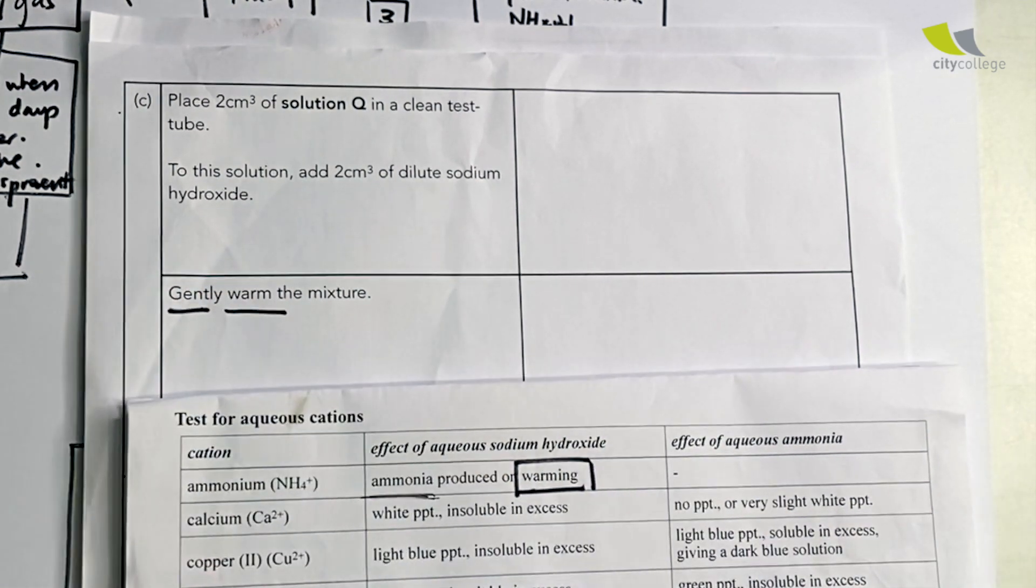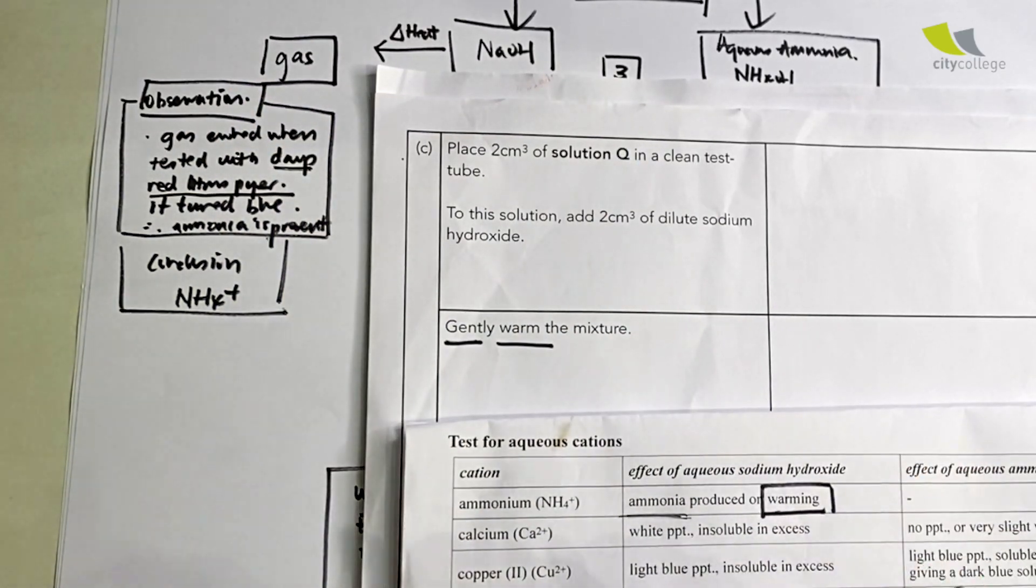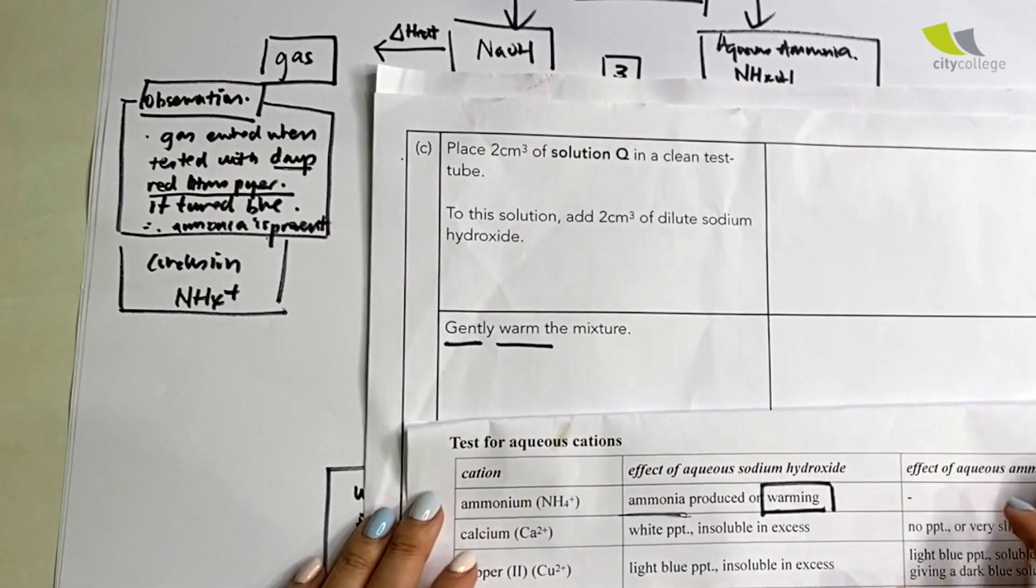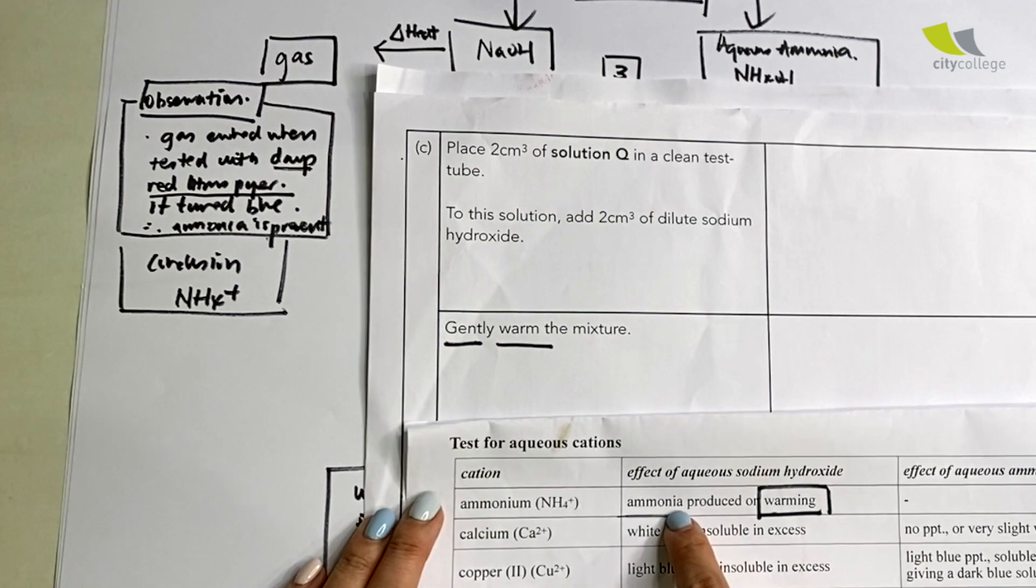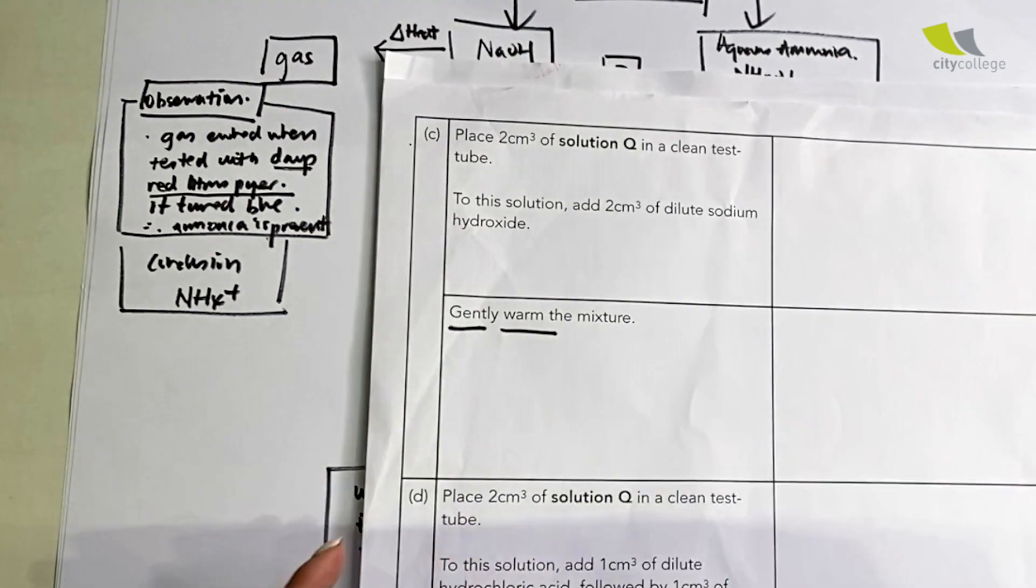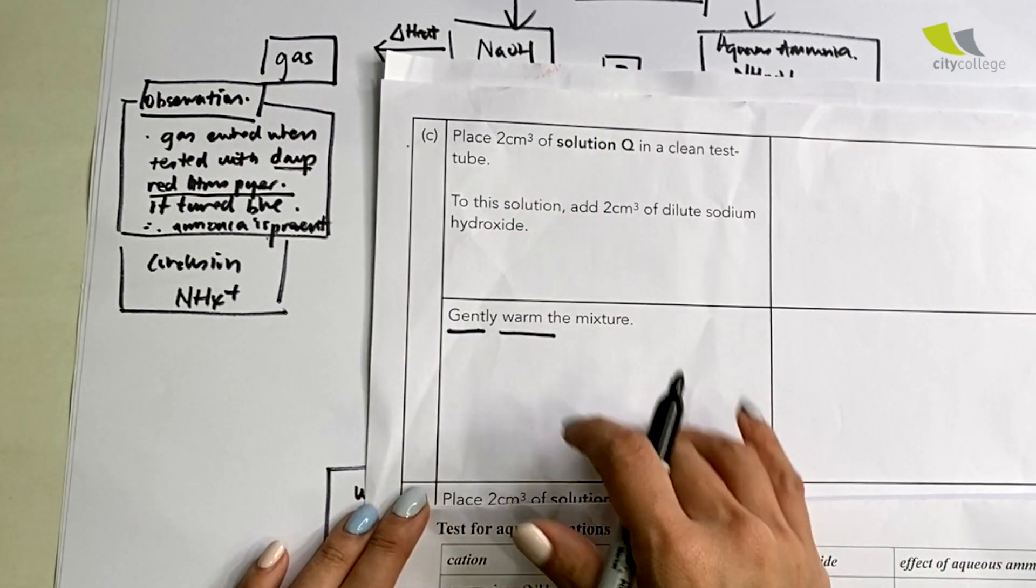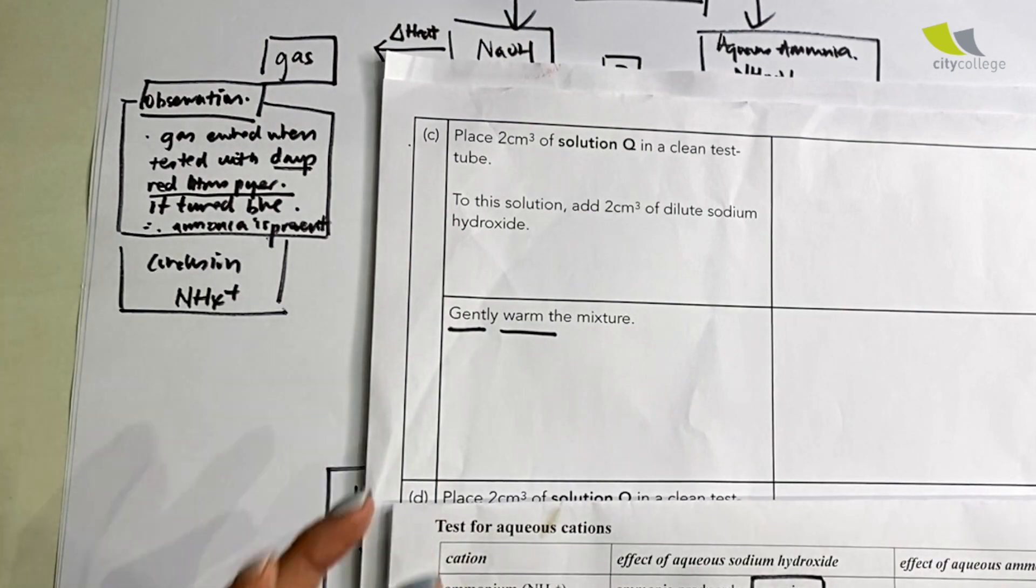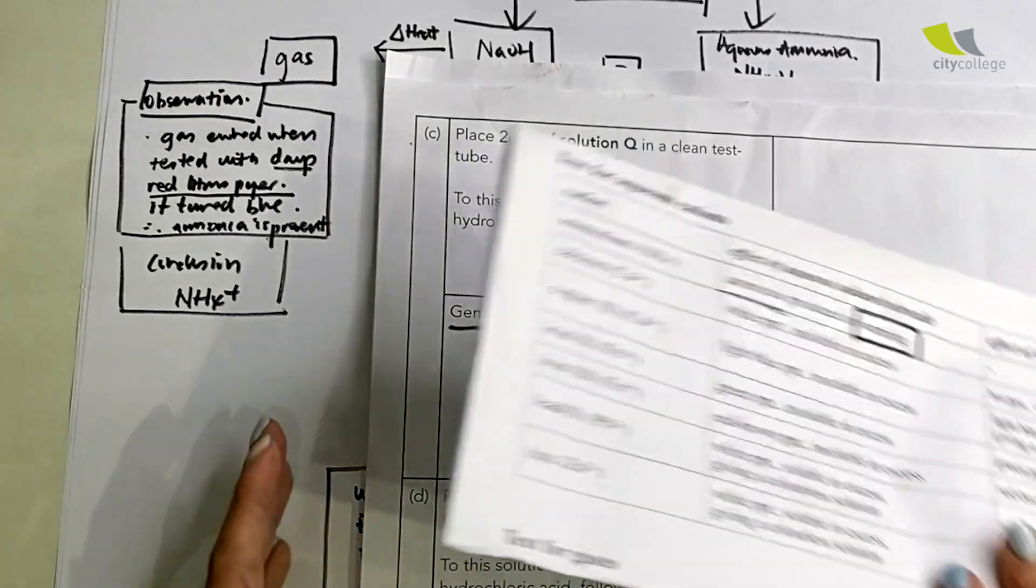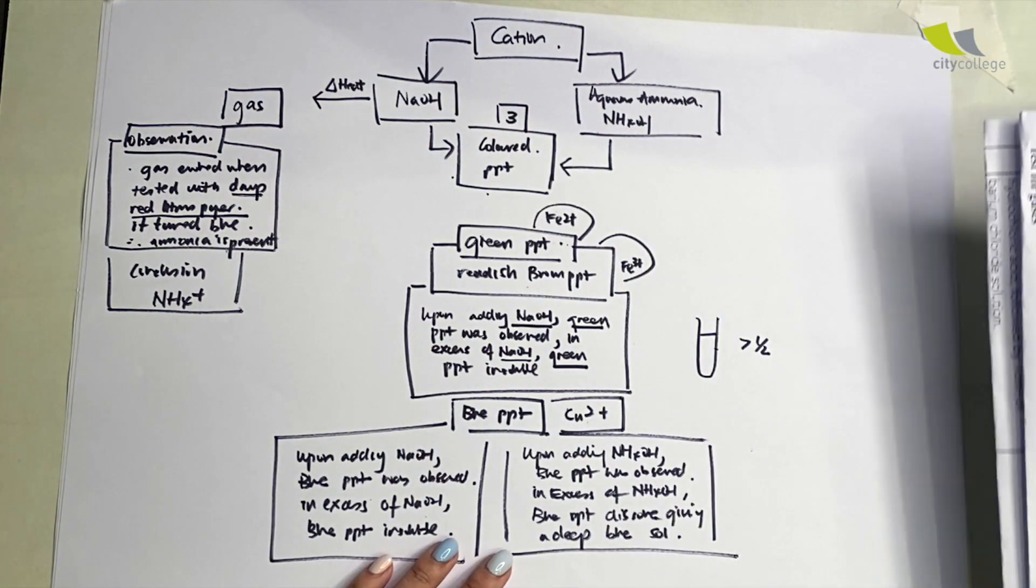However, they add some more and say "gently warm the mixture." Many students will just move on and warm the mixture, forgetting that one cation requires warming, which is ammonium. The moment you see this, please prepare in your hand a damp red litmus paper. As you heat the mixture, your litmus paper is near, you can see it change color. If it changes color, it shows ammonia gas is present and therefore ammonium is present.